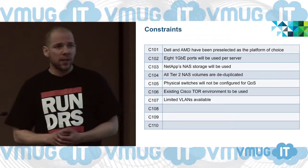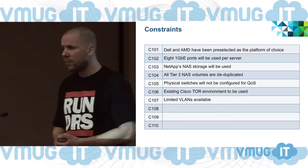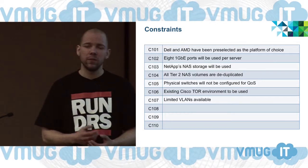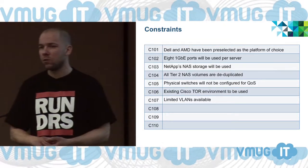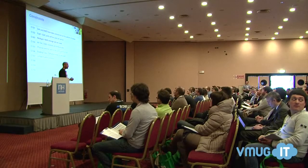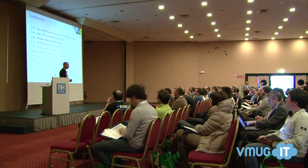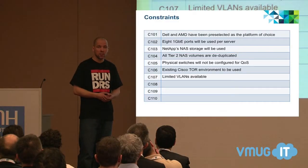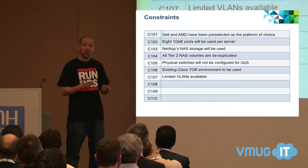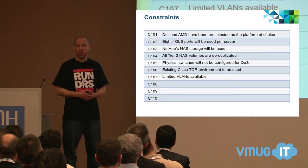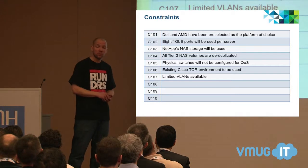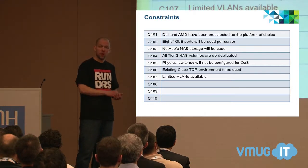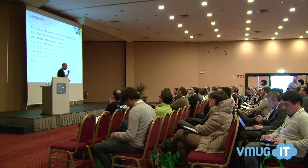Constraints typically feel negative to people — they feel bound to a specific solution. But constraints aren't negative. The fact that I have a NetApp array is not a negative thing; I just need to use it in my platform. I need to take it into account when I start doing my architecture, because it's going to drive other decisions. There might be specific requirements from a networking perspective or connection perspective from the host side. These constraints will drive some of the decisions you make.